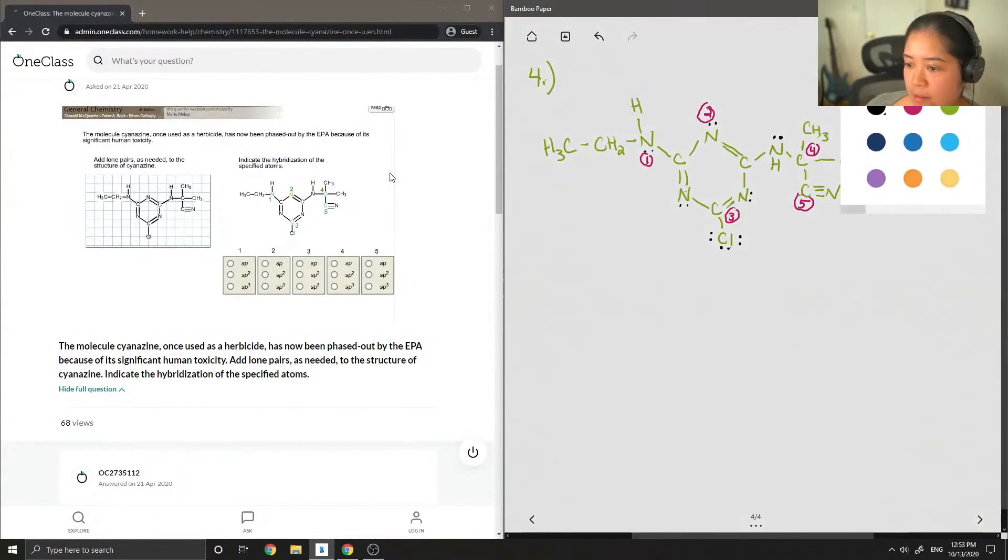So next I'm just going to write down a way that I try to remember different hybridizations. So for this question, I'm just going to write down the three that we're looking at: SP3, SP2, and SP. So with SP3 hybridization, your atom is connected to four charge clouds. So basically a charge cloud can mean either a lone pair of electrons, or it can mean a bond to another atom.